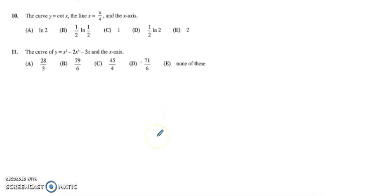Okay the curve of cotangent. I'm going to remember what that looks like. I do remember that there is an asymptote at pi and at 0. And they told us the line pi over 4 which will be right here and the x-axis.